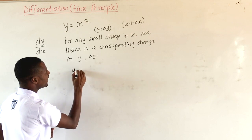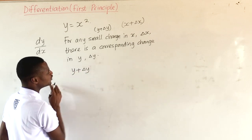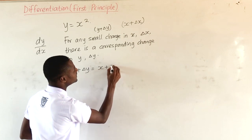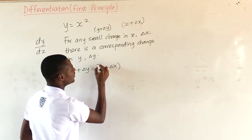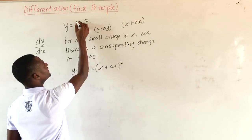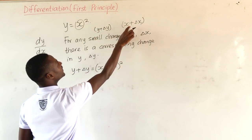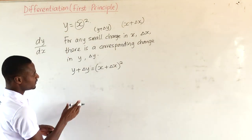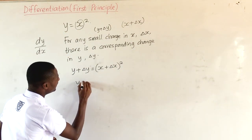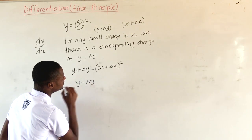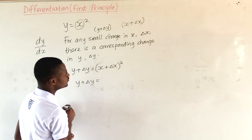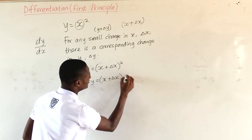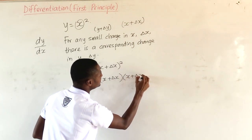And so, from this, we will have y plus the new small change in y equal to x plus the small change in x, all squared. Note that this x will now become x plus delta x, because it has increased by a small amount. Then we will have y plus the change in y equal to x plus change in x, times x plus change in x.